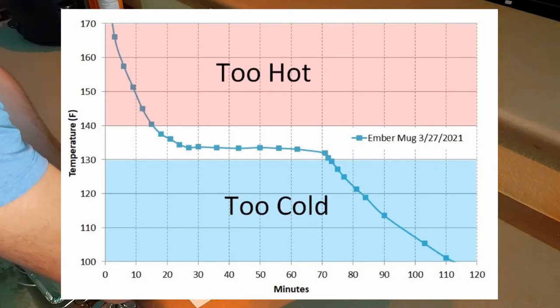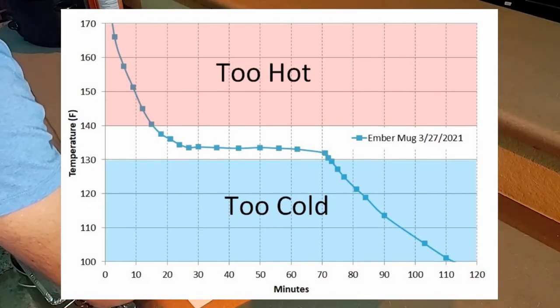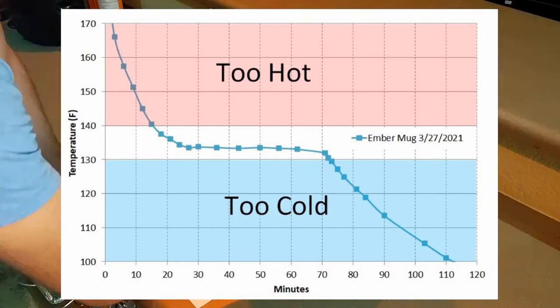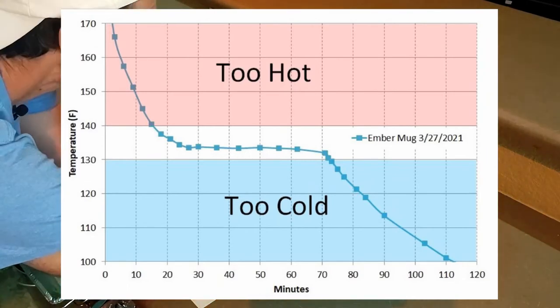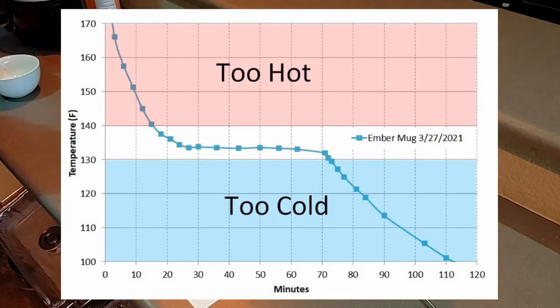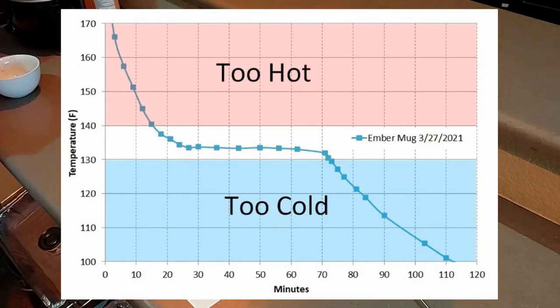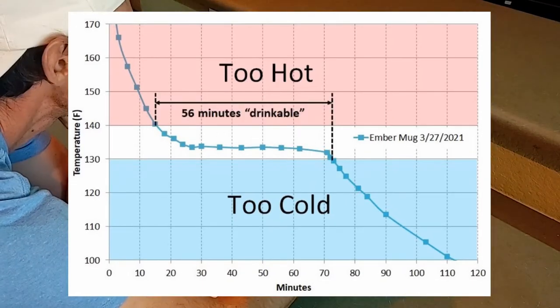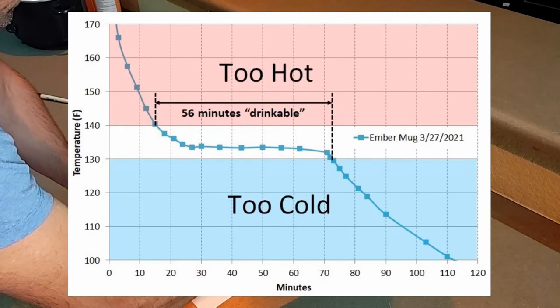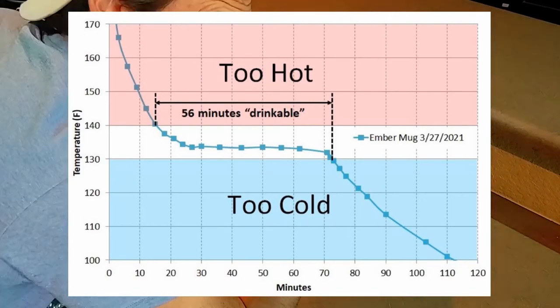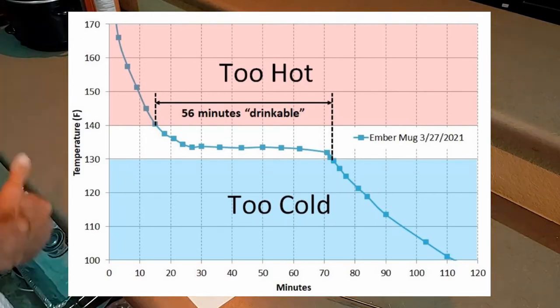The temperature then leveled off as the electric mug tried to keep it at a steady temperature, and then when it ran out of battery you can see the temperature begin to fall again and exit my drinkable zone at 72 minutes into the test. So in that test from six months ago, the coffee was drinkable to my standards from minute 16 to minute 72, or for 56 minutes.